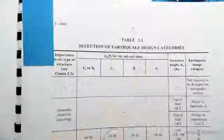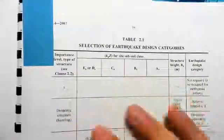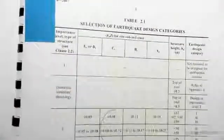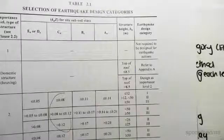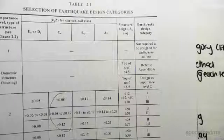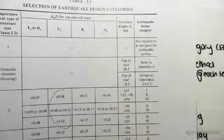So the earthquake design category, selection of earthquake design category, is found in table 2.1. There's a whole bunch of other steps we need to do to get to here. I'm just going to show you what we need though, so you can see that in this column here we've got earthquake design category.